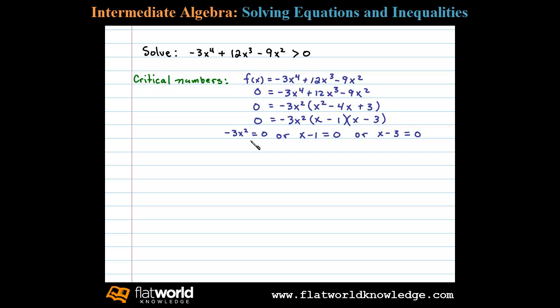Negative 3x² equal to 0 will give us a double root, x equals 0. x minus 1 equals 0 gives us the root x equals 1. And x minus 3 equals 0 will give us the last root, x equals 3.